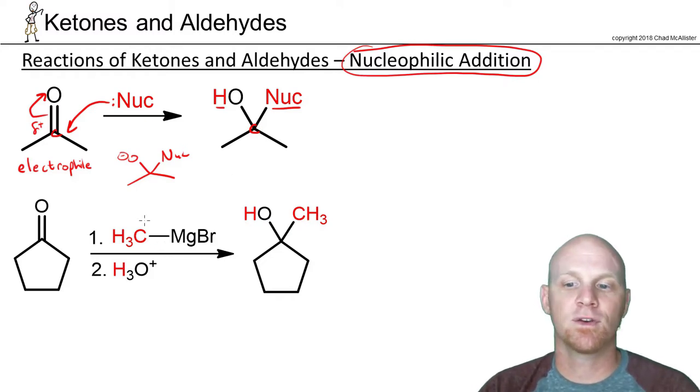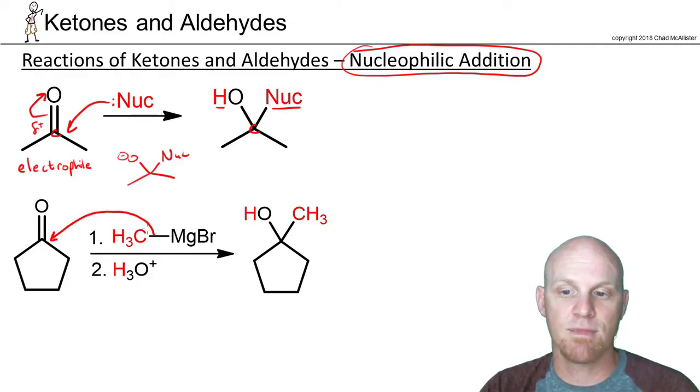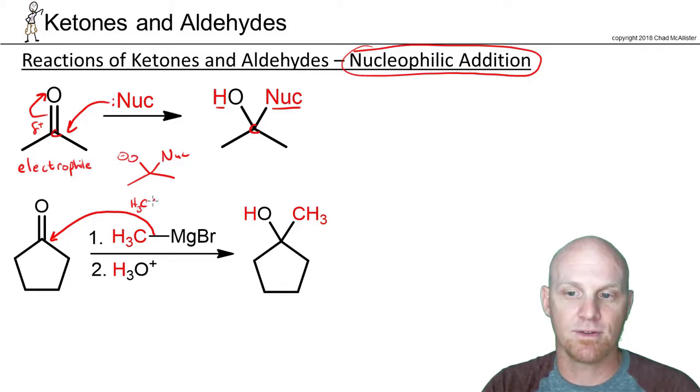This is actually something you've already seen with Grignard reagents. In fact, we studied Grignard addition to both ketones and aldehydes back in the alcohol chapter. It's a great way to synthesize an alcohol. And the first step is we actually do nucleophilic attack with, in this case, our methyl Grignard. Recall this is the equivalent of having a methyl anion.